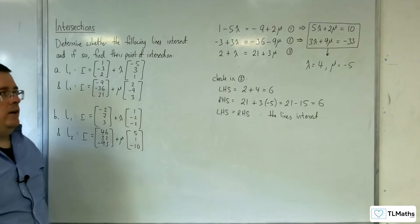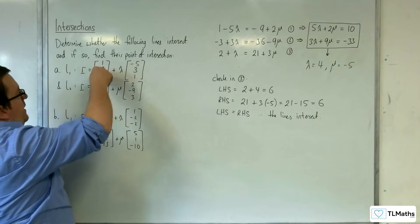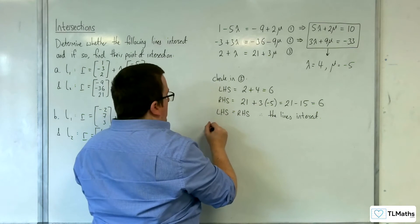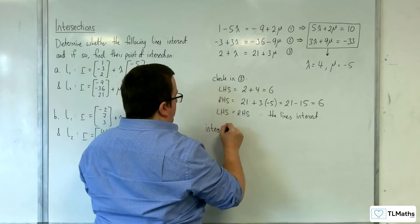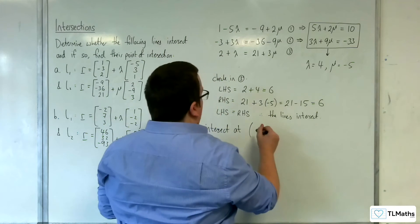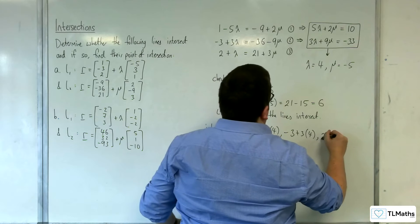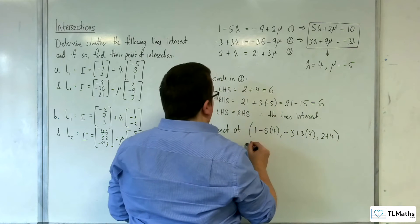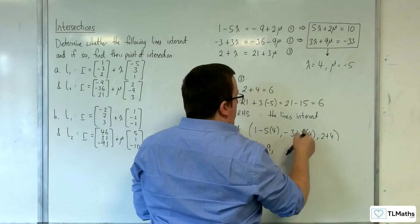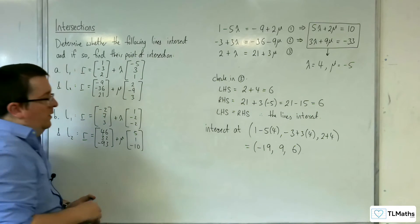So what we're left to do is work out the point of intersection. You've got λ and μ here, so you can either substitute λ into this or substitute μ into this. So they intersect at — let's substitute λ in: 1 take away 5 lots of 4, minus 3 plus 3 lots of 4, and 2 plus 4. So 1 take away 20 is minus 19, minus 3 plus 12 is 9, and 2 plus 4 is 6. So minus 19, 9, 6 is the point of intersection.